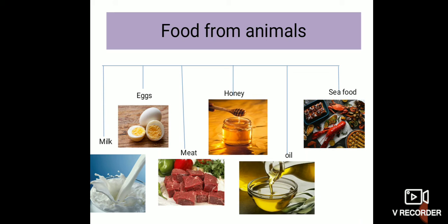First is milk. Animals are also a prime source of food. We obtain different food items from different animals — milk, egg, meat, honey, etc. are some food items we get from animals. However, the number of food-providing animals is less in comparison to food-producing plants, but food from animals contains some useful nutrients.